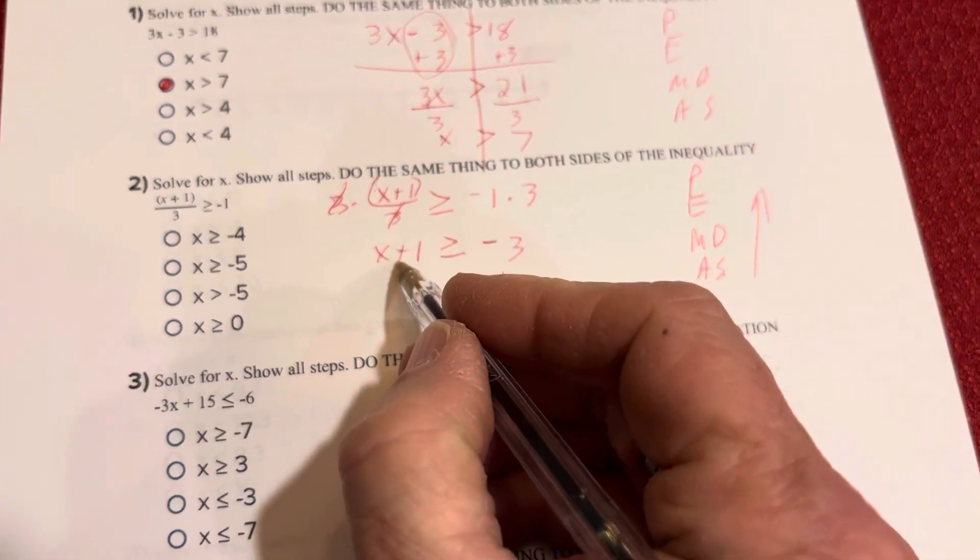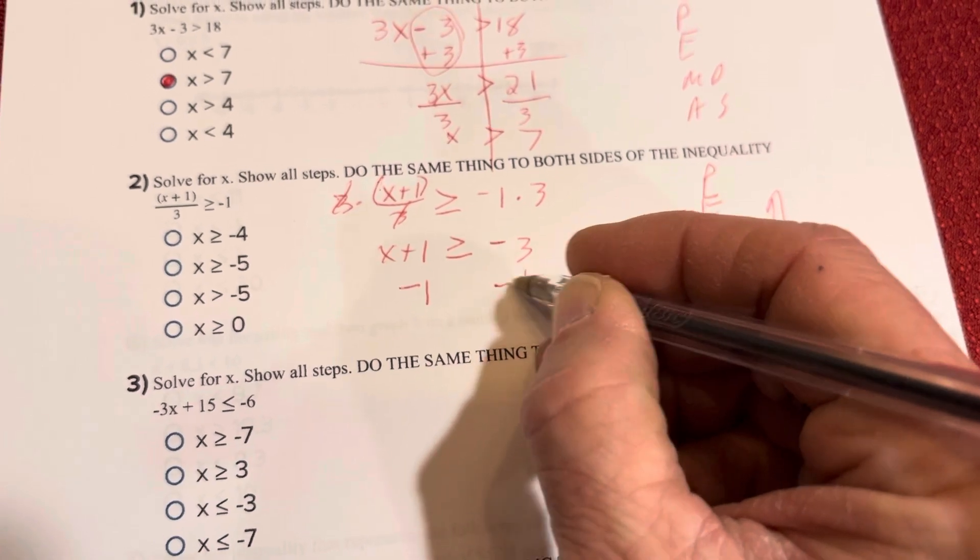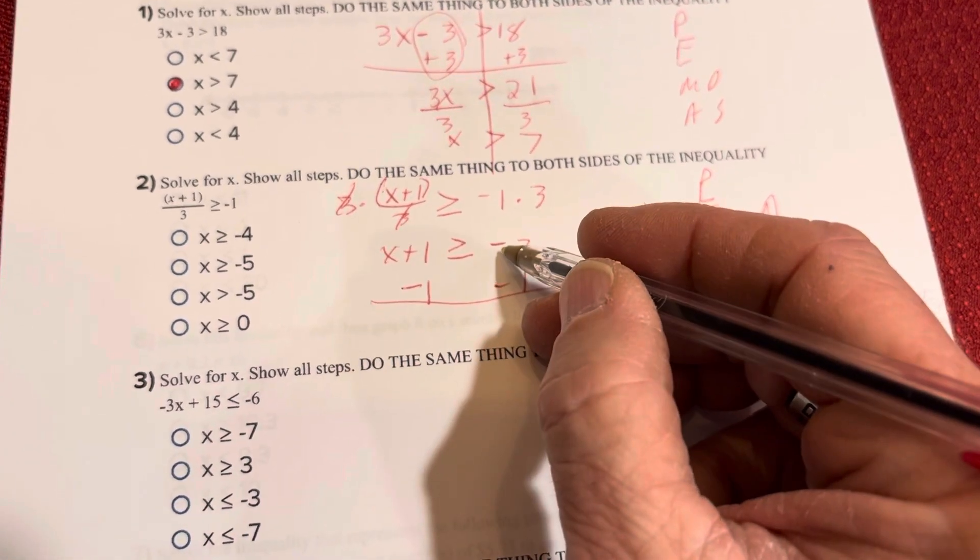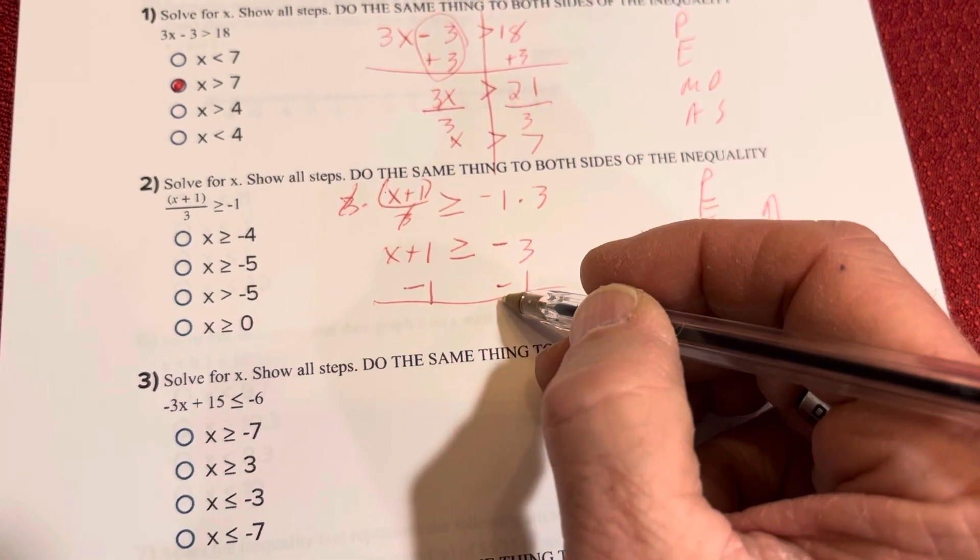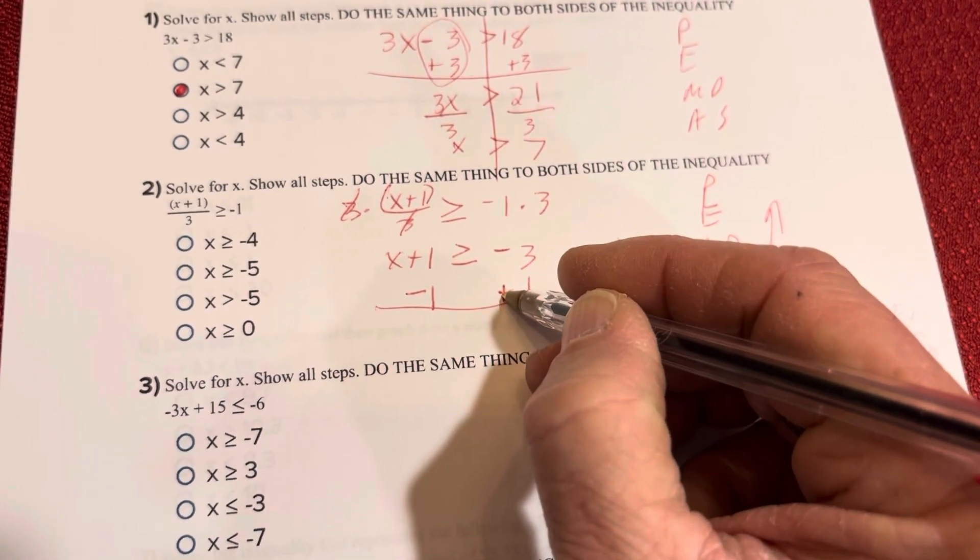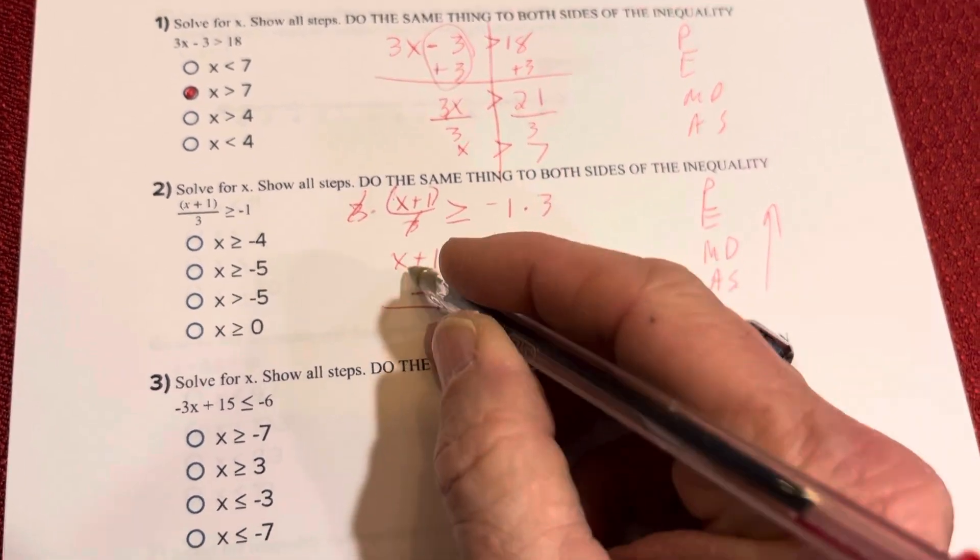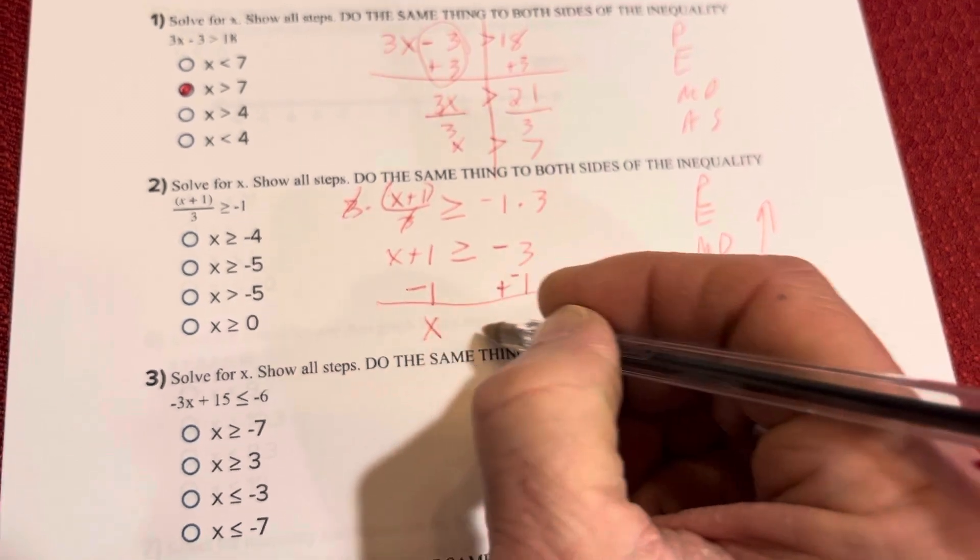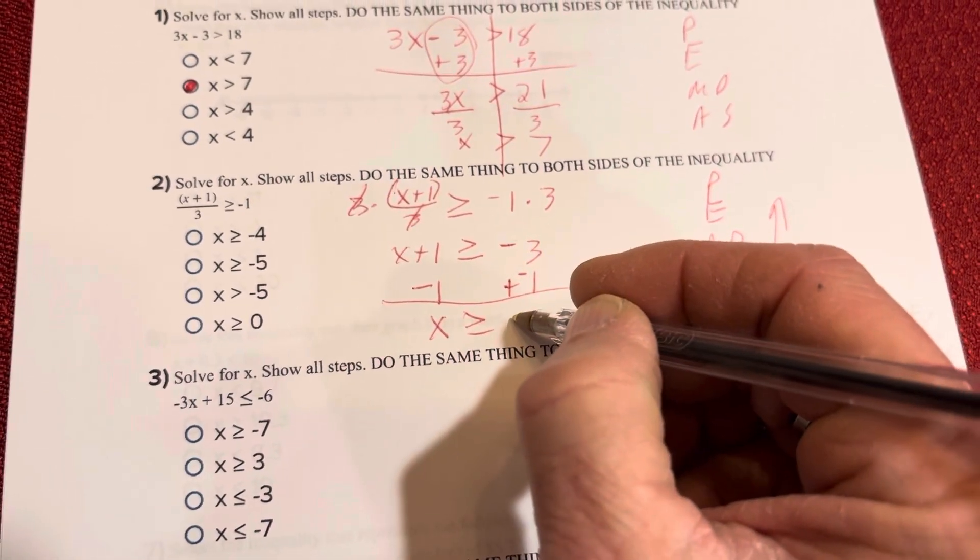Now I am going to undo the addition with subtraction. Subtract 1. Do that from both sides. Now you may or may not recognize that subtracting 1 from both sides here, this is the same thing as negative 3 plus negative 1. If you want to do that, I change that to addition and change that to its opposite, which would be negative. Then you see that these cancel when I get x is greater than or equal to negative 3 plus negative 1 is negative 4.